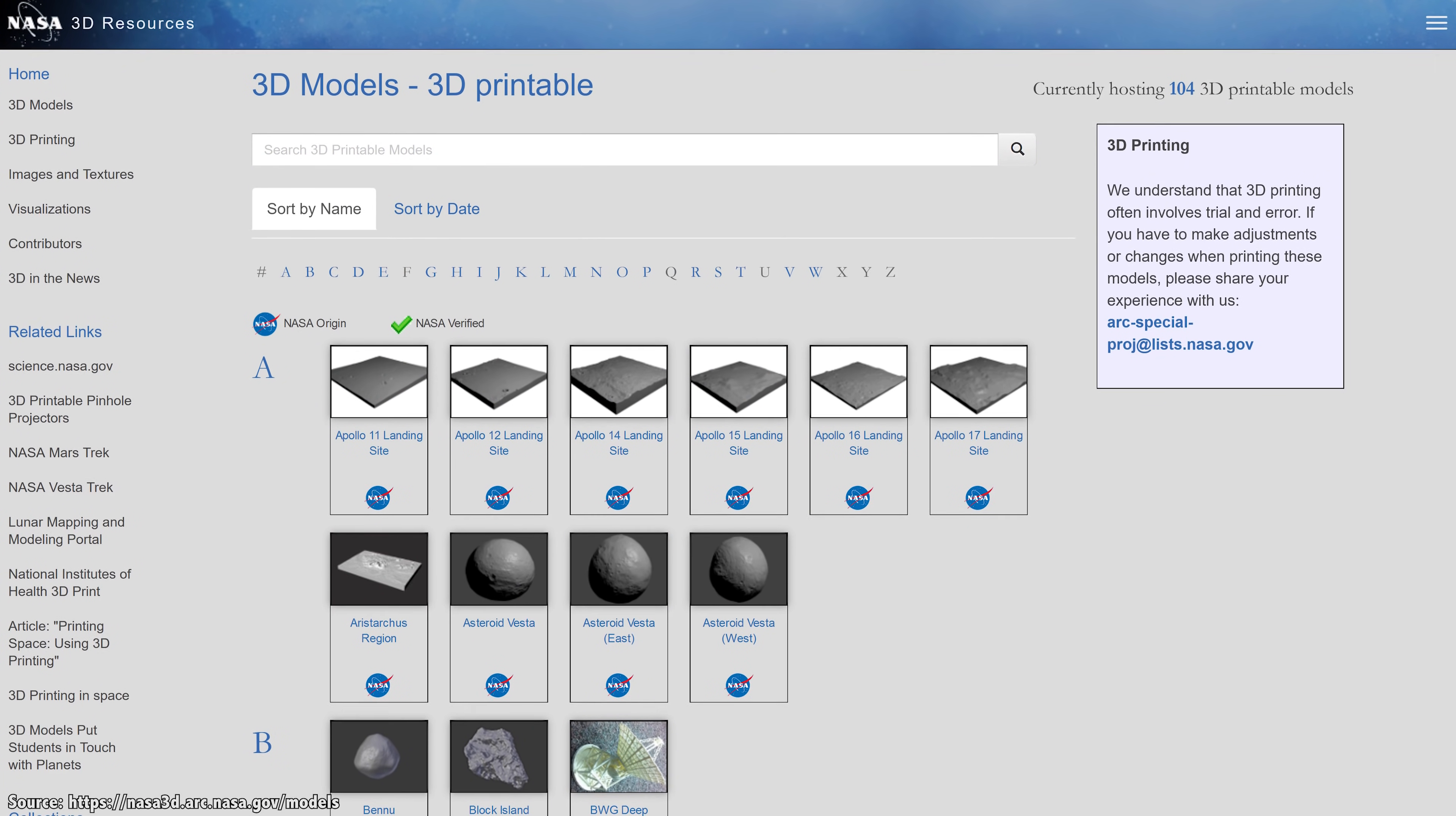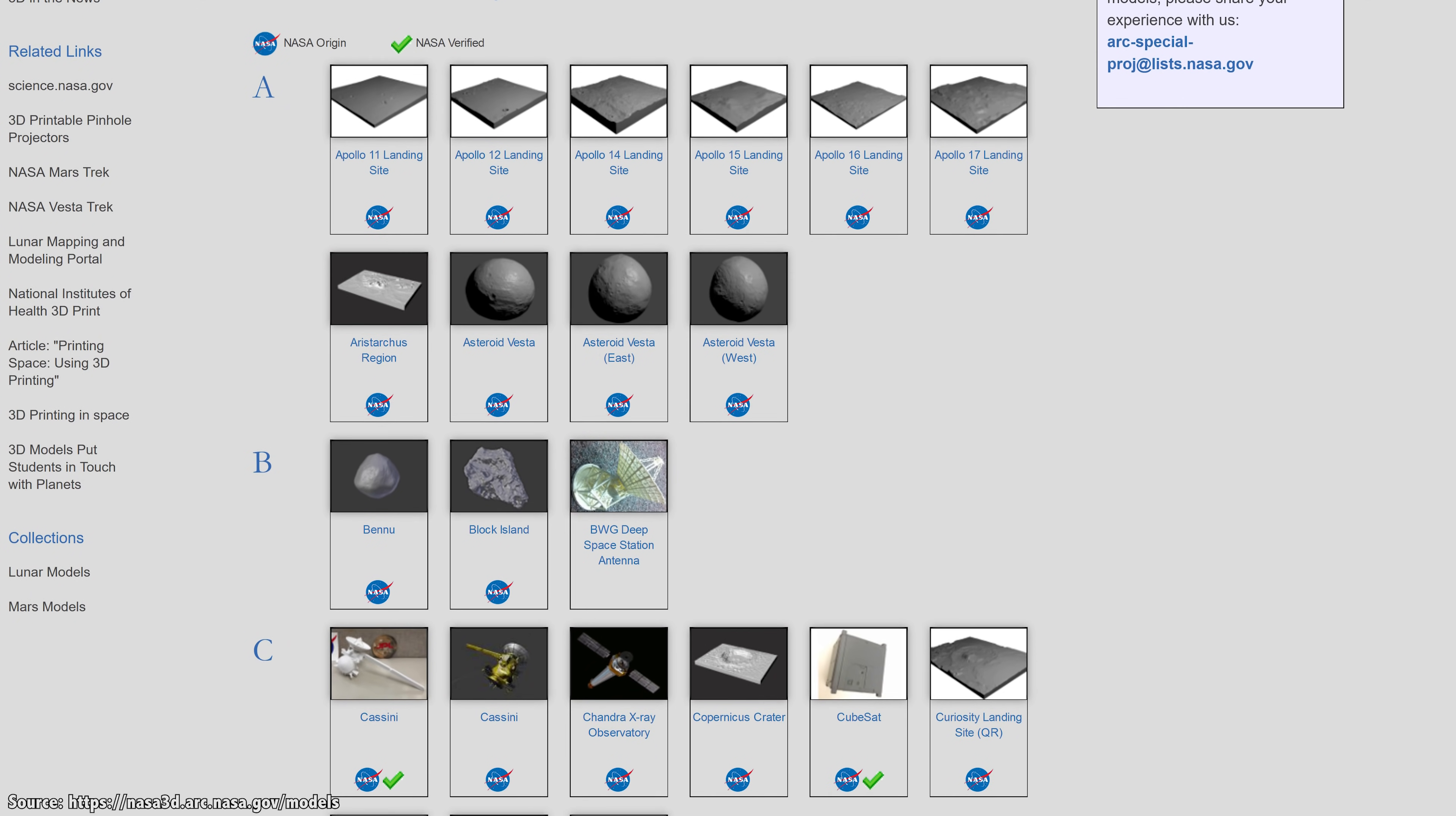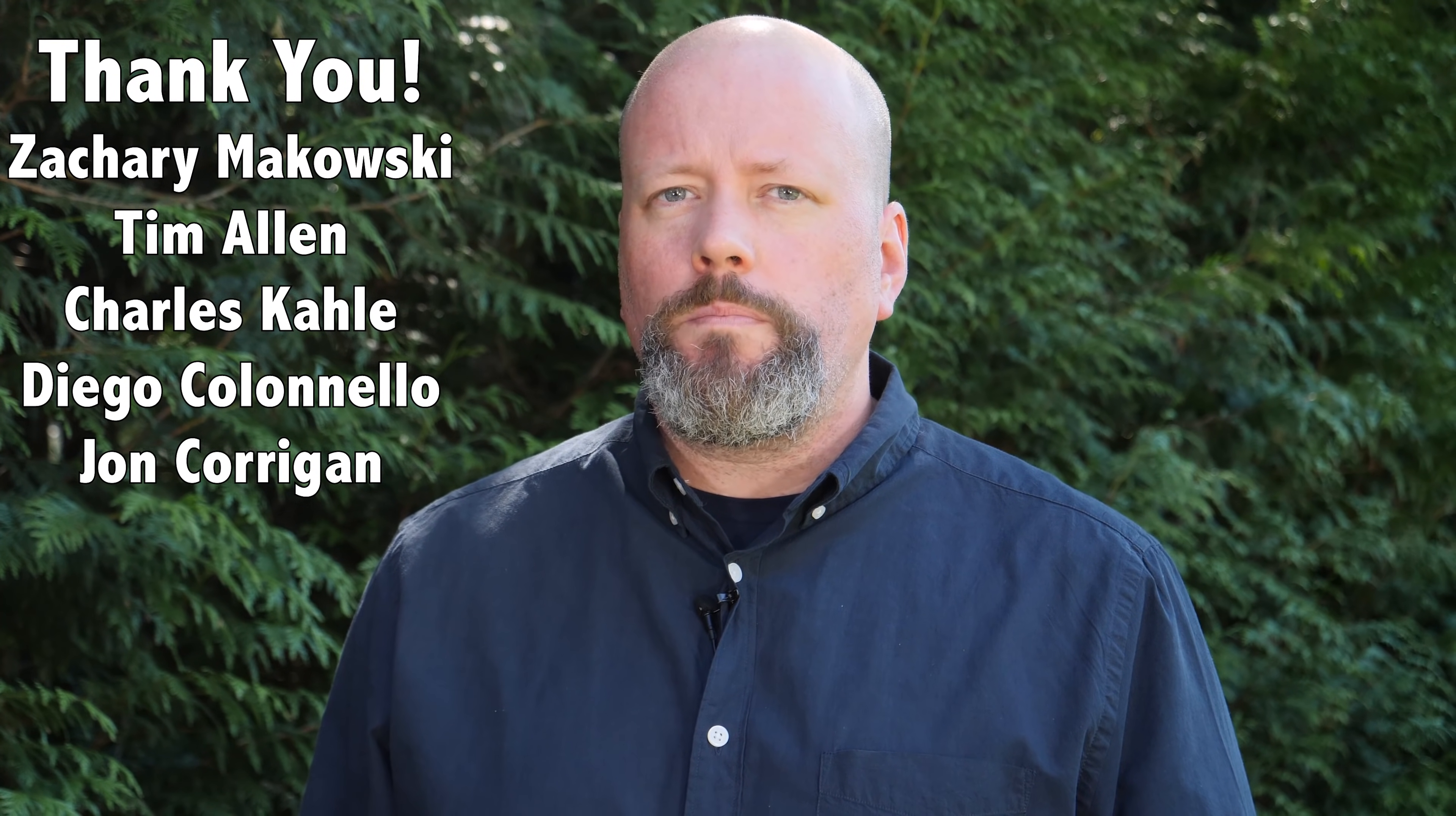NASA actually makes a range of objects available for download from its website, so you can 3D print your own asteroid or OSIRIS-REx spacecraft. We've talked about some of NASA's ISRU plans already, but next we're going to talk about space construction and harvesting energy. But first I'd like to thank Zachary Makowski, Tim Allen, Charles Cale, Diego Canelo, John Corrigan, and the rest of our 831 patrons for their generous support. If you love what we're doing and you want to get in on the action, head over to patreon.com/universetoday.